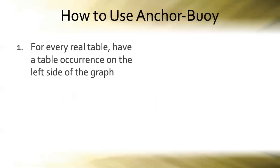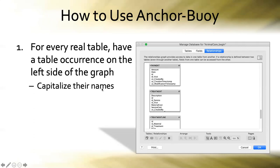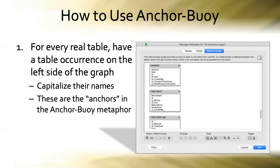There are four simple premises that the Anchor Buoy method is based upon. The first: for every real table in your system, have a table occurrence on the left-hand side of the graph. When you create a table in the Tables tab of the Manage Database dialog, FileMaker automatically places a table occurrence on the relationship graph. Move those over to the left-hand side and capitalize their names — that's part of the naming scheme. These table occurrences become the anchors.